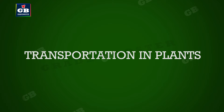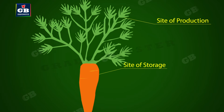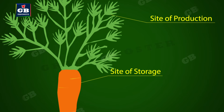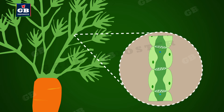Transportation in plants: plants have slow transport systems because of their low energy needs. Materials are mainly transported in two pathways. One pathway carries food materials from the site of production to the site of storage — that is, from leaf to stem or root. This conductive tissue is called phloem.